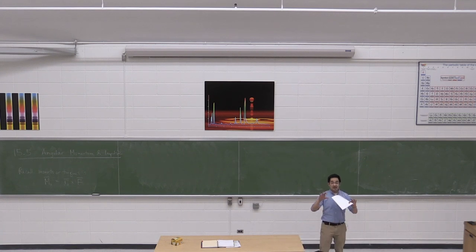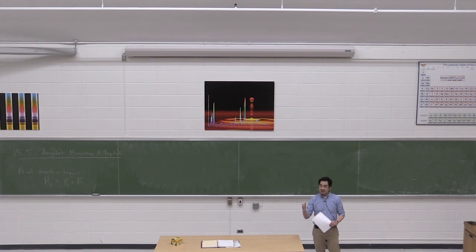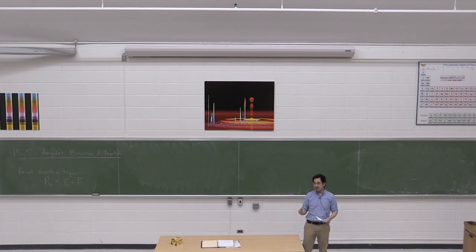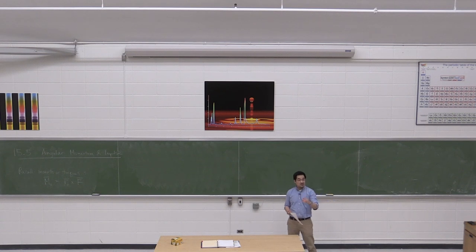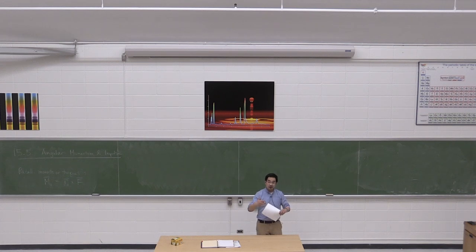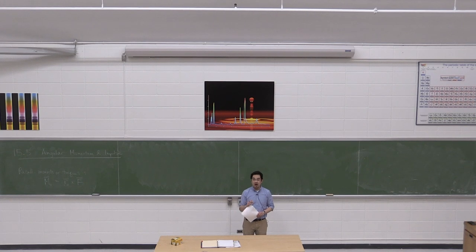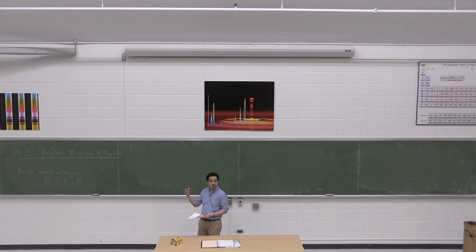This is the last topic — a kind of wrap-up. We've dealt with lots of different methods: from F equals ma, to work-energy, to momentum and impulse. Now I'm going to throw one more thing at you. Everything we've been talking about with momentum and impulse applies to objects moving in straight lines, which carry linear momentum. As soon as things start to spin or rotate, there is another type of momentum: angular momentum and impulse.